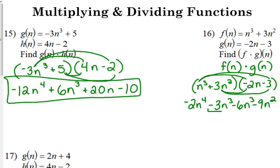This time we do have like terms. We have 2n cubed. So negative 2n to the 4th, we've got negative 3 minus 6, negative 9n cubed, minus 9n squared.